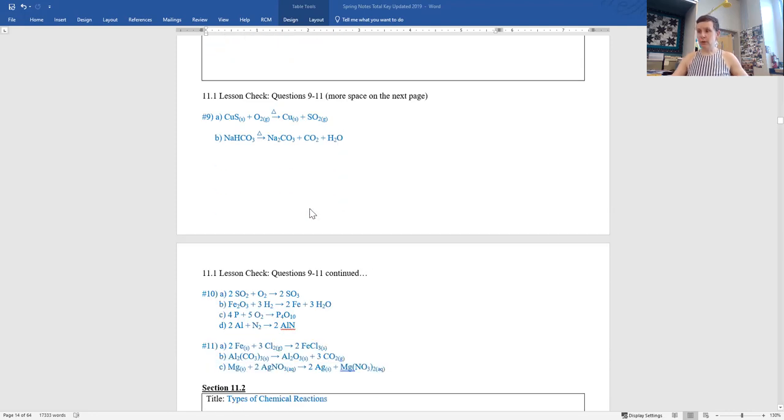The lesson check questions here. Number nine, we got copper two sulfide, which means they're balanced in one-to-one ratio because copper is a plus two, sulfide minus two. Solid plus oxygen gas O2 because it's diatomic gas, create solid copper and sulfur dioxide gas when heated. That's where we get that triangle from. So make sure you have all those physical states and that triangle in there.